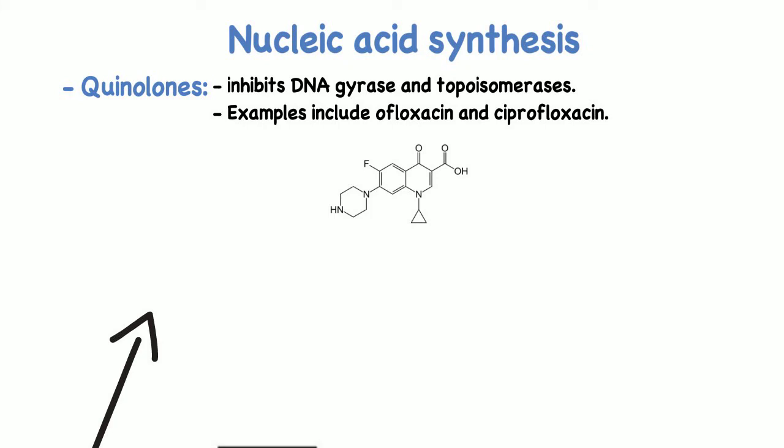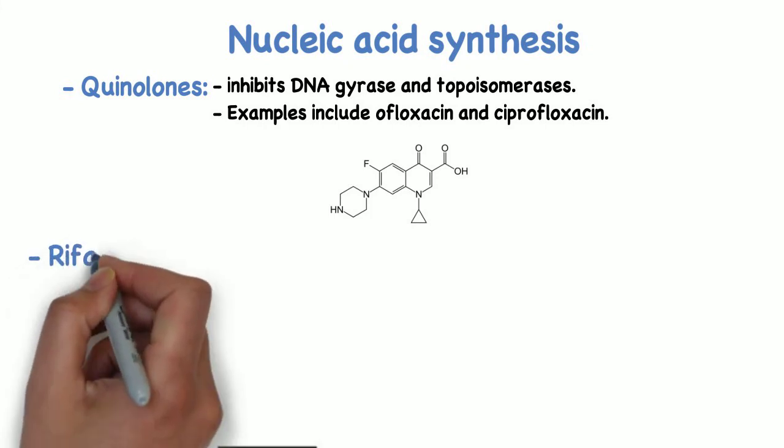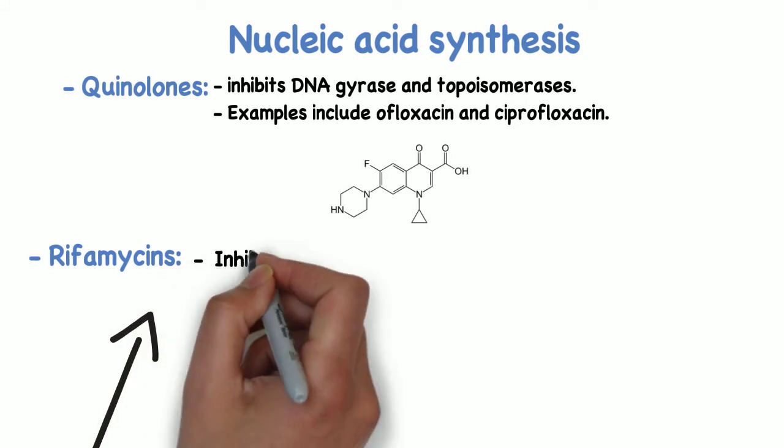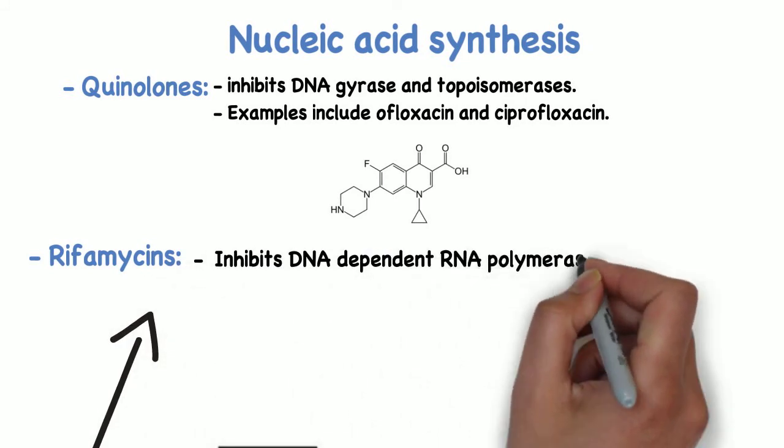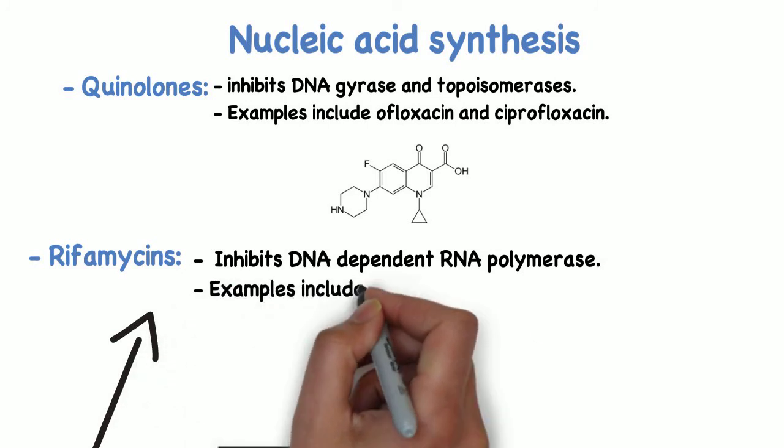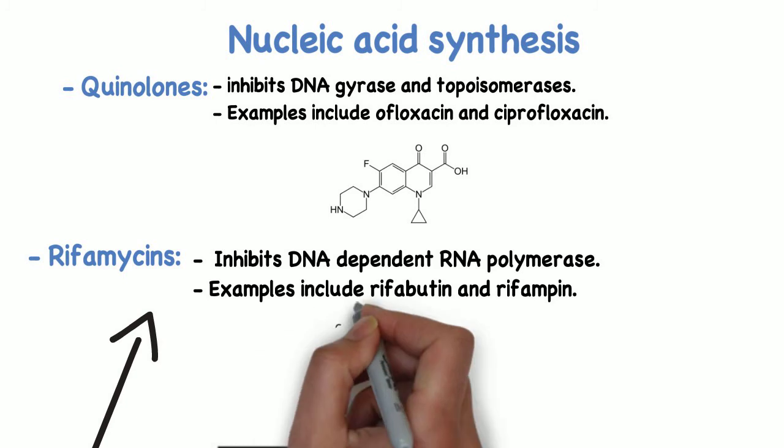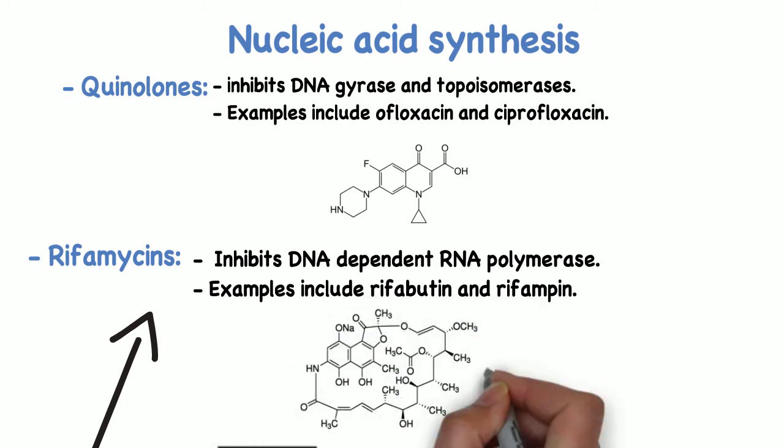Another example of an antibiotic that affects nucleic acid synthesis is rifamycins. These inhibit DNA-dependent RNA polymerase, so it blocks mRNA synthesis. Examples include rifabutin and rifampin.